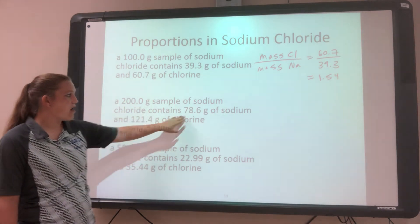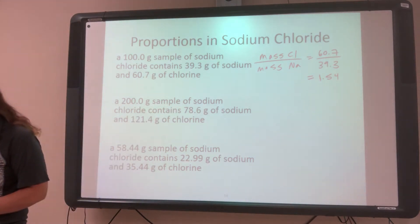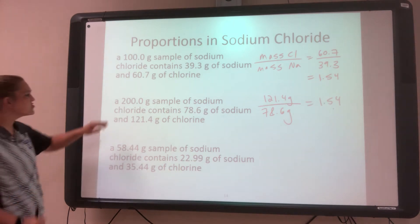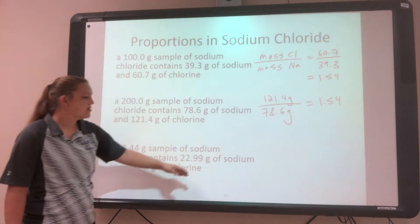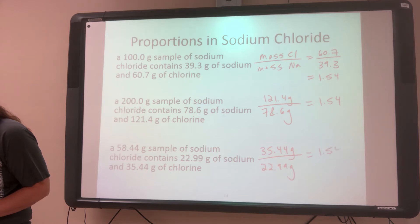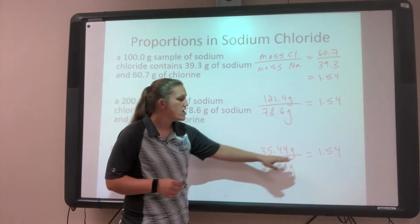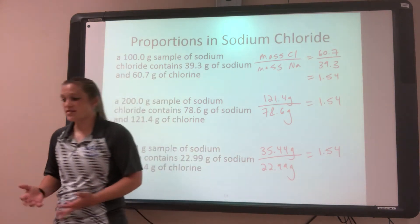With the 200-gram sample, I have a different amount of sodium and a different amount of chlorine. Chlorine divided by sodium: 121.4 grams divided by 78.6 grams also comes out to 1.54. And with the 58.44-gram sample — 35.44 grams of chlorine divided by 22.99 grams of sodium — that also comes out to 1.54. This is the law of definite proportions: your proportion of one element to the other is always going to be the same, whether you have a little or a lot.